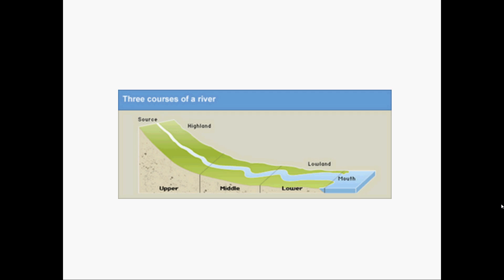Before we start we need to look at the three courses of the river. The upper course is what we will be looking at today, the middle course and the lower course. This handy diagram shows where they are.